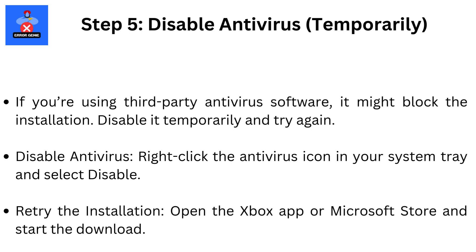Step 5: Disable Antivirus temporarily. If you're using third-party antivirus software, it might block the installation. Disable it temporarily and try again by right-clicking the antivirus icon in your system tray and selecting Disable. Then open the Xbox app or Microsoft Store and start the download. Note: don't forget to re-enable your antivirus after the download completes.